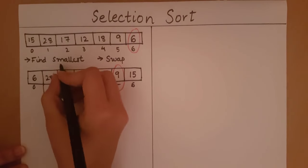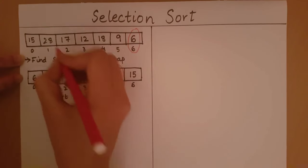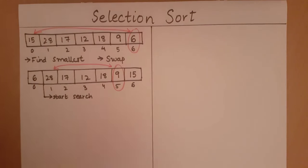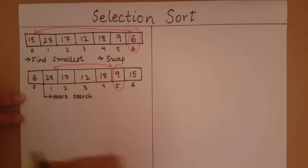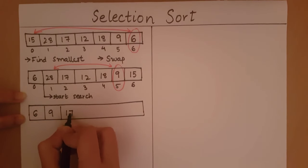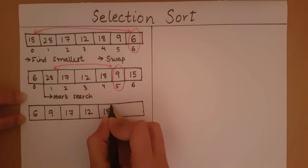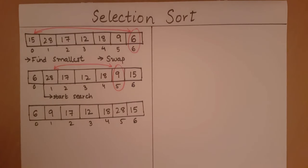We select the smallest element as 9. The second step is to swap this element with the element we started our search with — the element at index 1, which is 28. So we are going to swap 9 and 28. After swapping, 6 and 9 at positions 0 and 1 have been filled correctly — they have come to their respective correct positions.